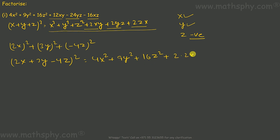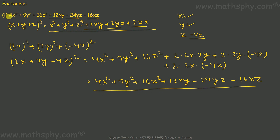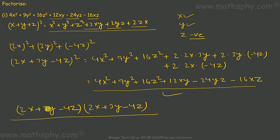Expanding further: plus 2·(2x)·(3y) gives +12xy, plus 2·(3y)·(-4z) gives -24yz, plus 2·(2x)·(-4z) gives -16xz. Checking each term matches: 4x², 9y², 16z², 12xy, -24yz, -16xz — all the same. So this expression can be written as (2x + 3y - 4z)².